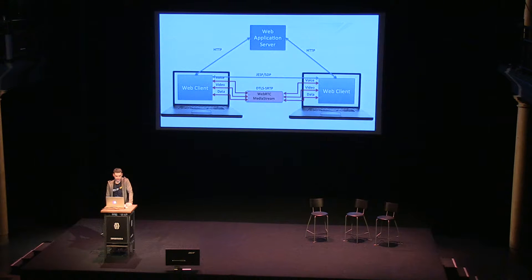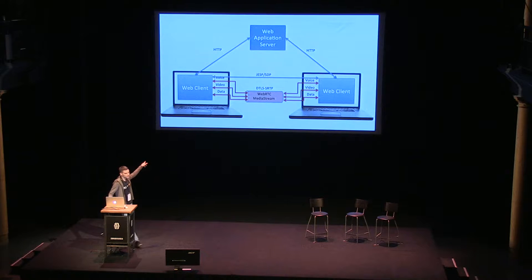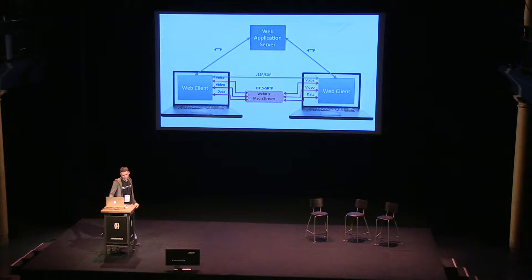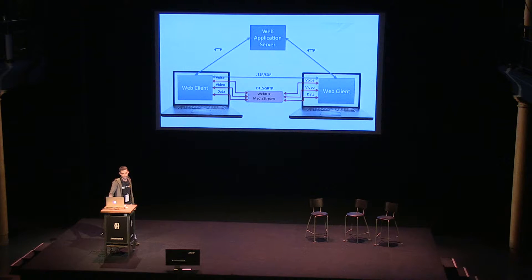How does it work under the hood? There are two clients, and you have some web application server. The clients can't reach each other directly — they need the server to exchange ICE candidate packages, which tell each client how to reach the other through all the NATs and routing between them. It's a pretty complicated thing, and if you want to dive into that it will take a few chapters of a good book — like Ilya Grigorik's High Performance Networking. And diving into how WebRTC works can take a few hours or a few days.